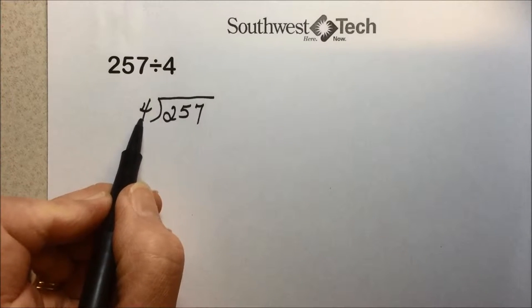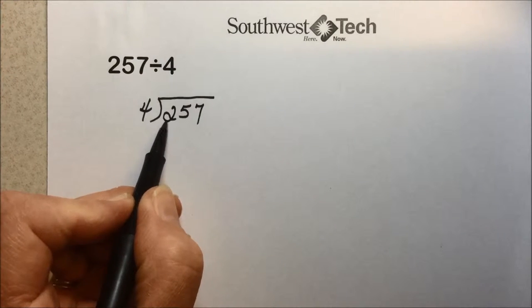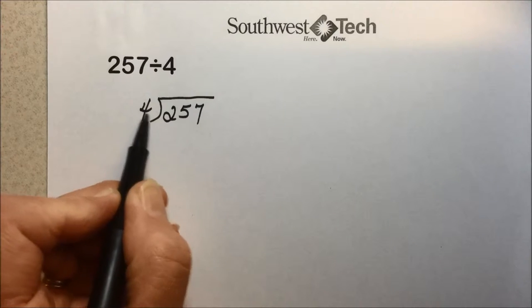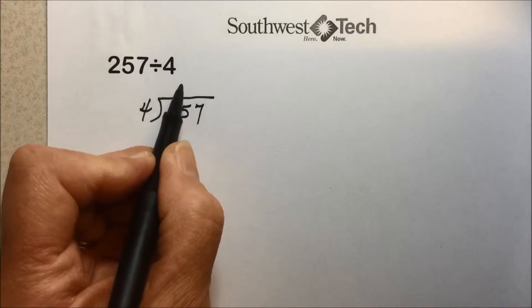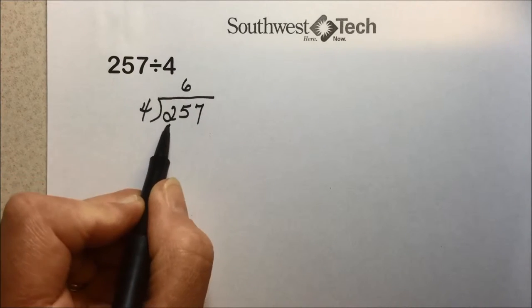We take our divisor, see how many times it goes into the number here. 4 doesn't go into 2, so I take the next place value. 4 does go into 25. 6 times we multiply. 4 times 6 is 24.